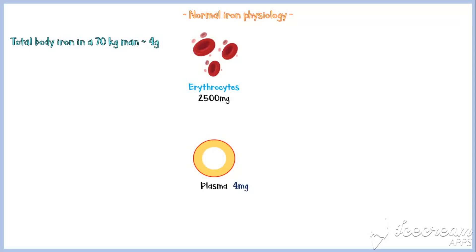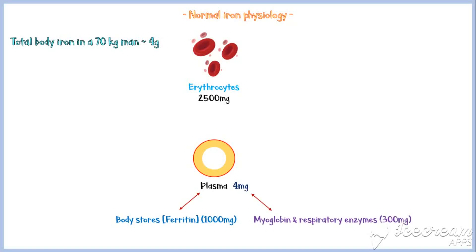About 1,000 mg of iron is stored as ferritin in various parts of the body, and about 300 mg of iron is in the form of myoglobin and other respiratory enzymes. Plasma receives about 1-2 mg of iron daily via intestinal absorption of dietary iron, and about the same amount of iron is lost from the body daily.